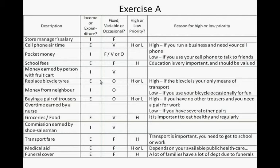Replacing your bicycle tires is an expenditure; it is occasional. It can be high or low priority: high priority if your bicycle is your only means of transport, low priority if you use it occasionally for fun. Buying a pair of trousers is an expenditure; it is occasional. It is high priority if you have no other trousers and need them for work, and low priority if you have several other pairs or just want them because they look nice.